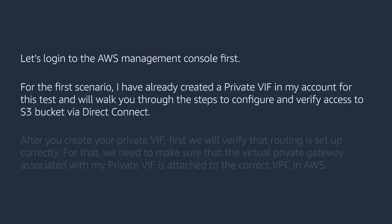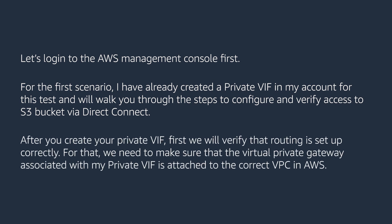For the first scenario, I have already created a private VIF in my account for this test and will walk you through the steps to configure and verify access to the S3 bucket via Direct Connect. After you create your private VIF, first we'll verify that routing is set up correctly. For that, we need to make sure that the virtual private gateway associated with the private VIF is attached to the correct VPC in AWS. Let's see how we can do that.